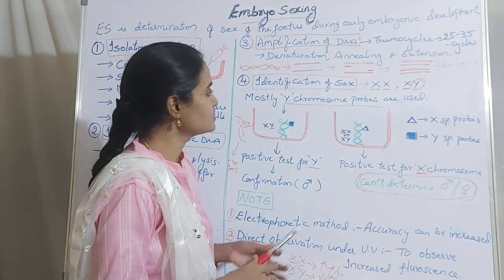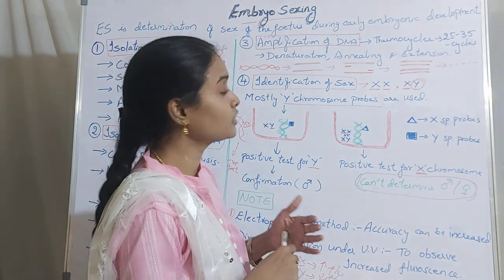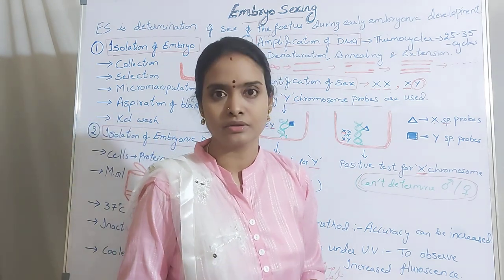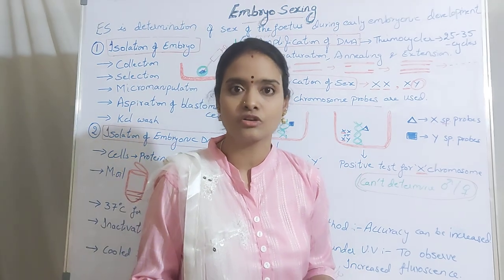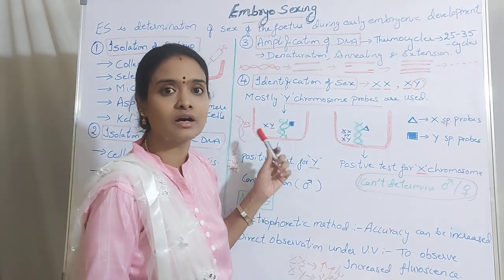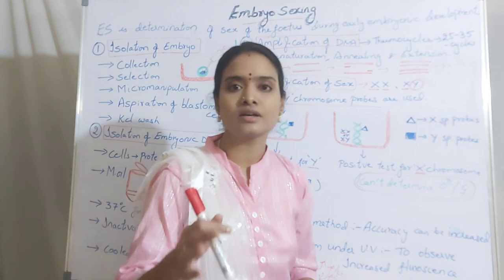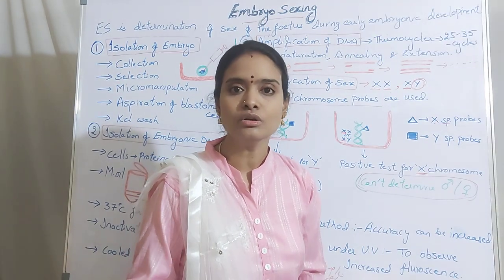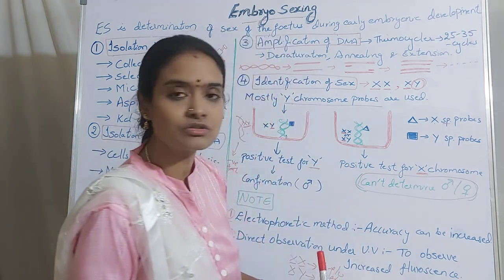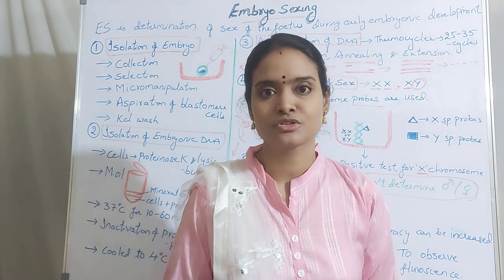In the development of livestock, we require only the female cattle to be more in number for the sake of reproduction or milk production. You will select all the embryos which are female and introduce them into the surrogate cattle animal for production. If you have any doubts in this topic, please text me and please subscribe for further videos. Thank you.